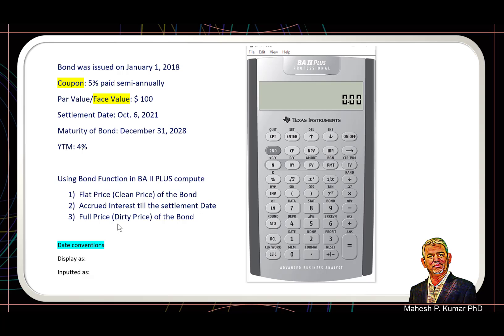We are supposed to calculate the flat price of the bond, accrued interest till settlement date, and full price of the bond. We will do that using inbuilt bond function. We will go to the calculator's bond function, second ninth. Here we are into the bond function.